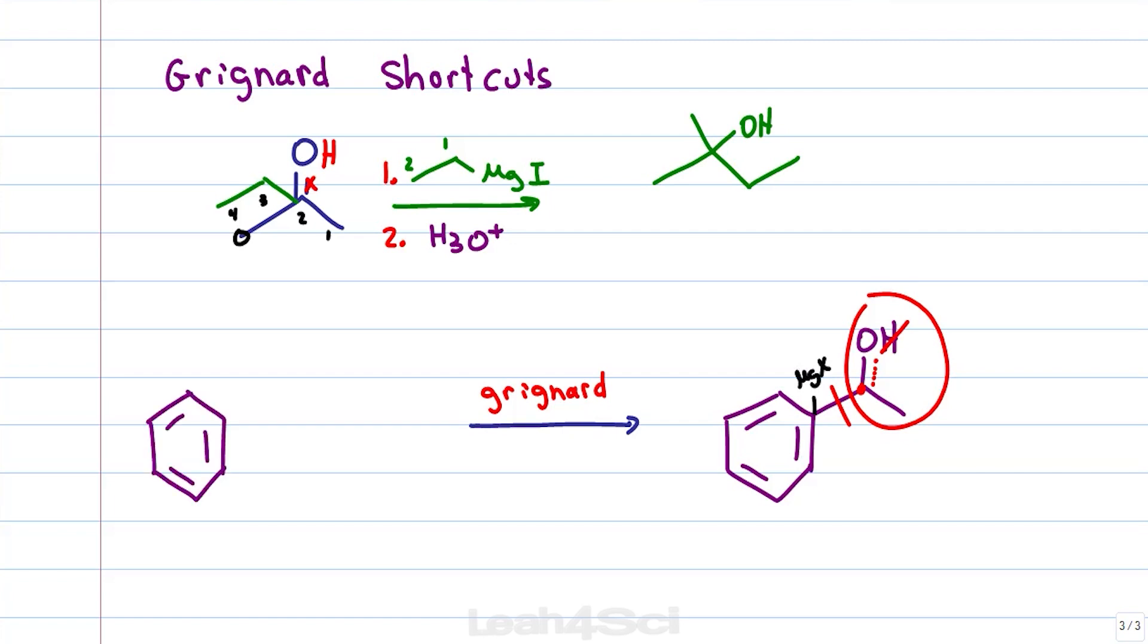This portion is the carbonyl that got attacked and for the other portion just add an MgX. For this reaction, our reactants would include an aromatic Grignard and a two carbon carbonyl, in this case an aldehyde.